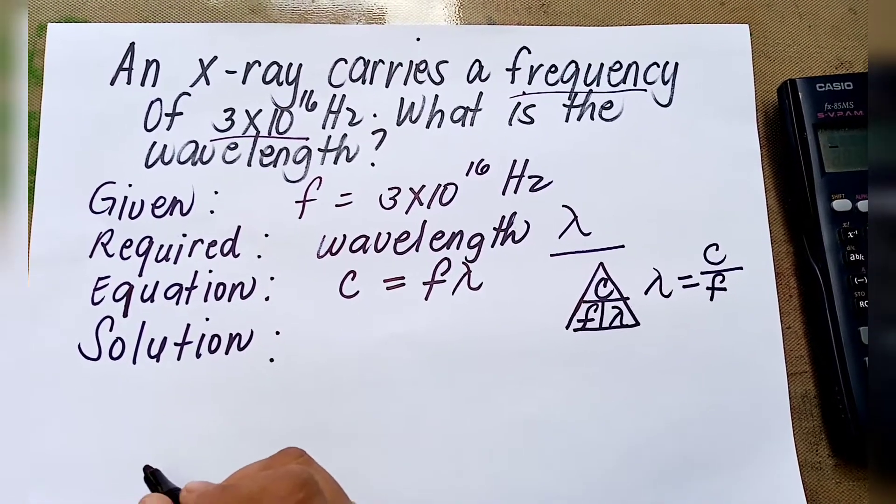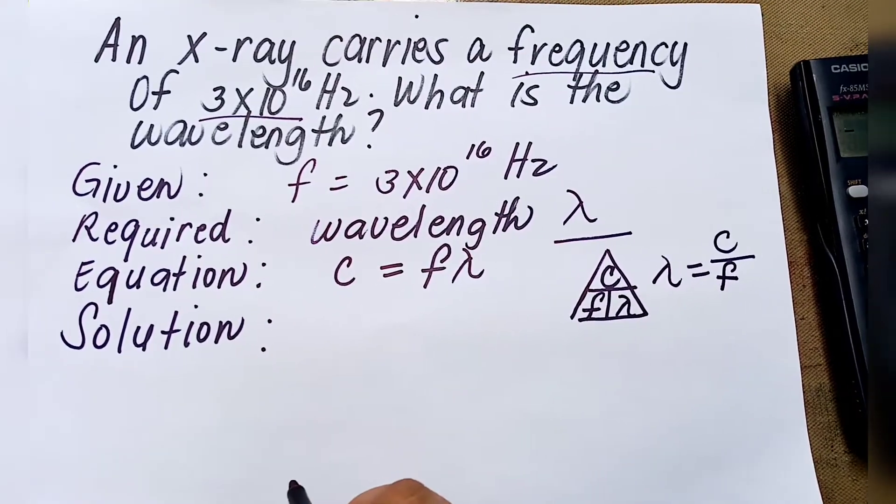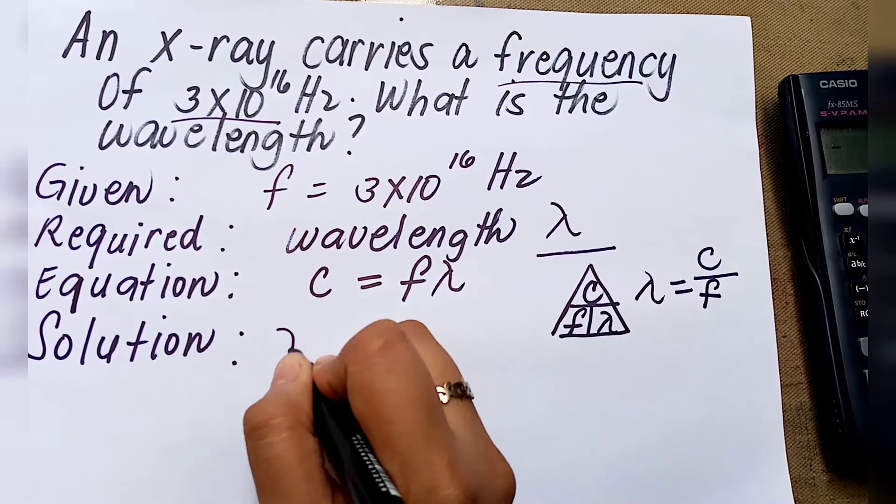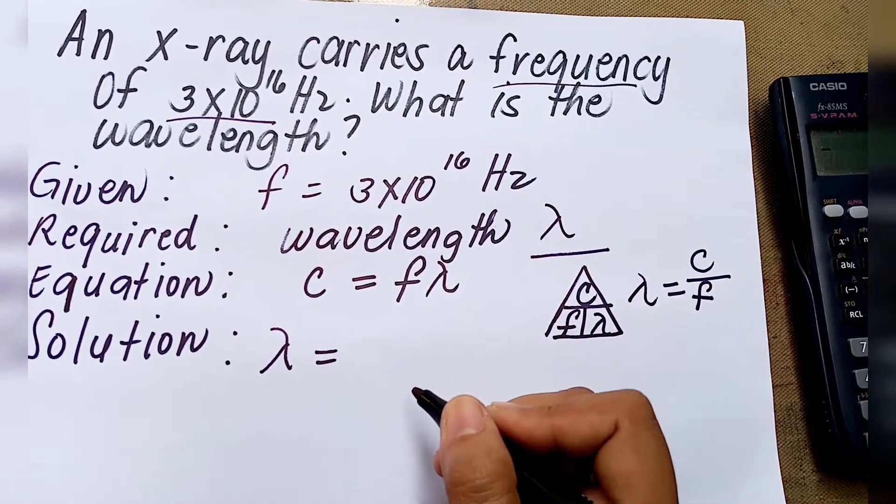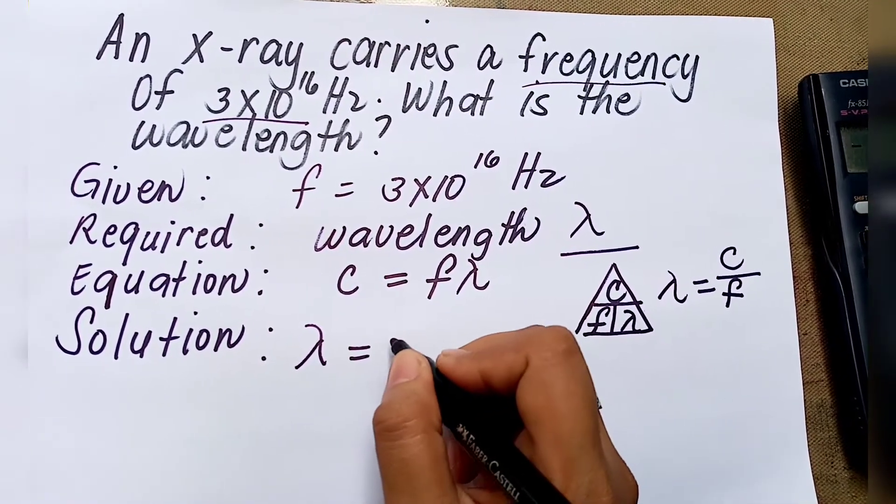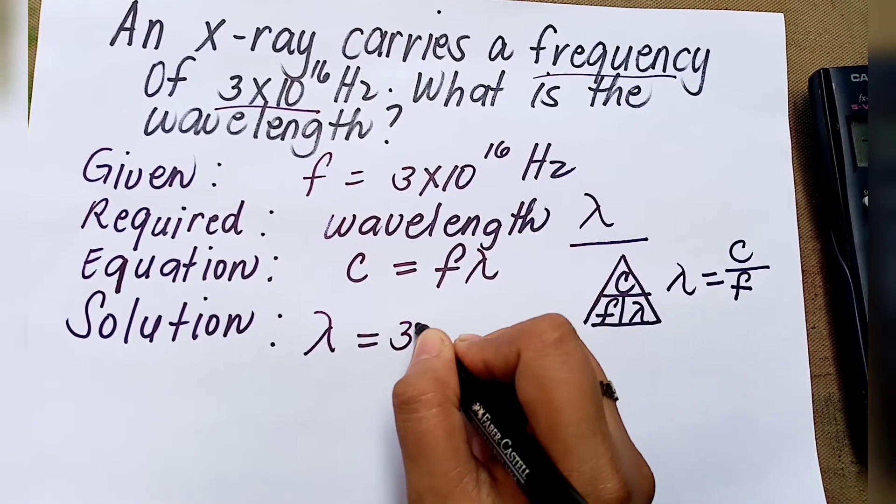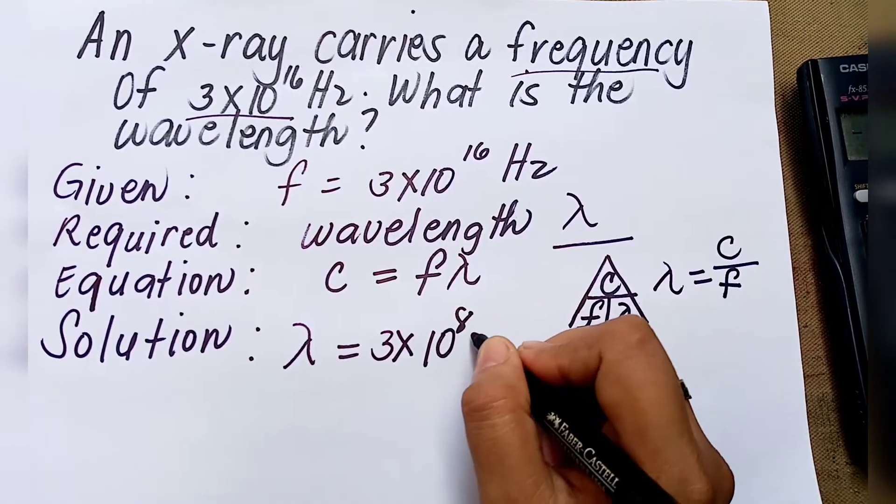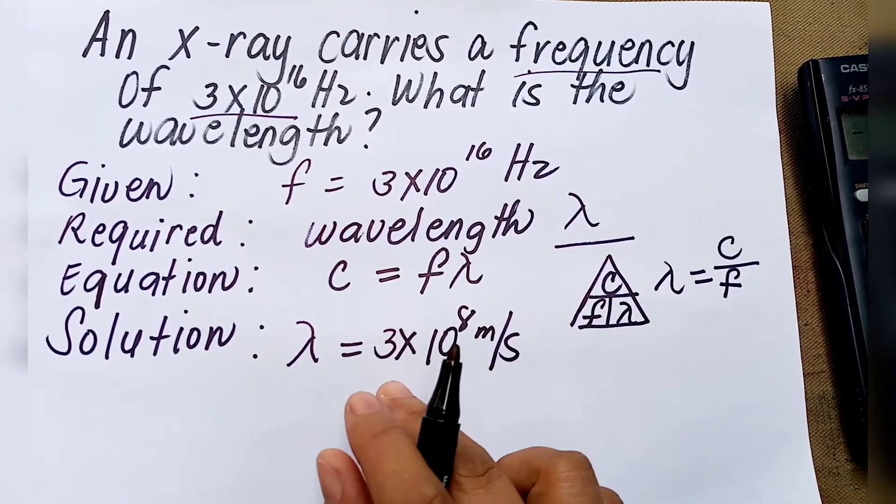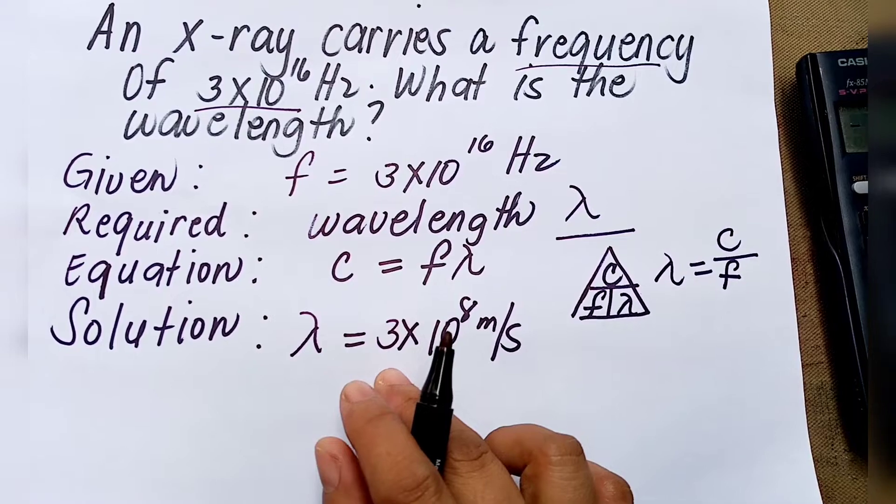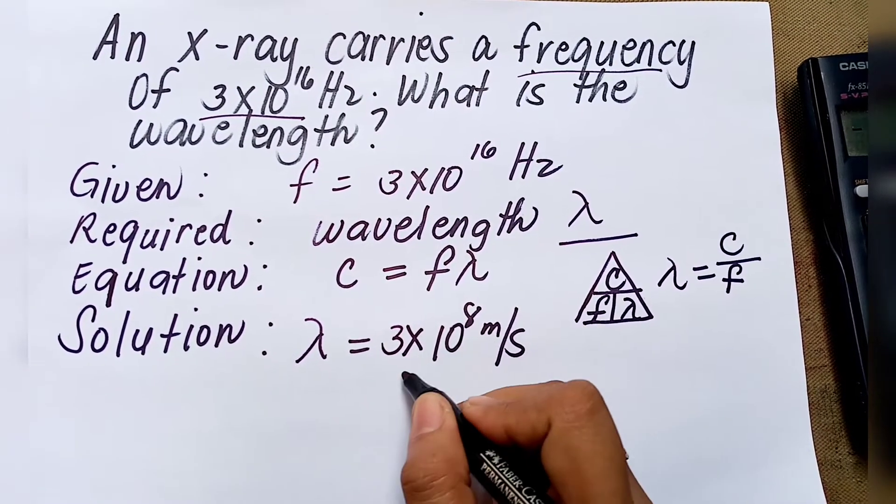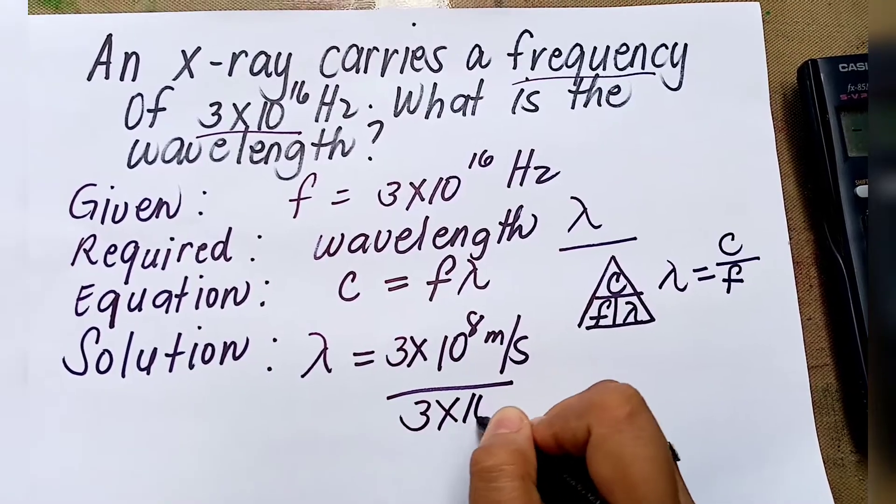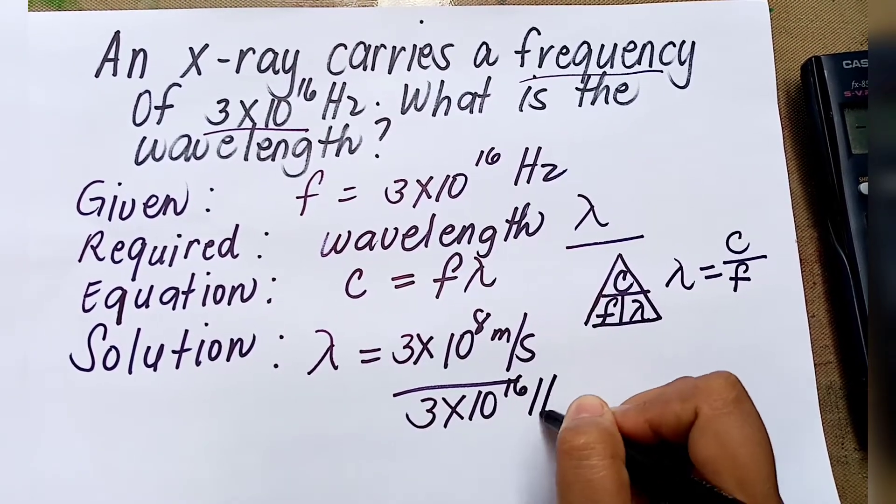We have now the formula to be used. Let us proceed with the solution. Wavelength is equal to 3 times 10 to the 8 meters per second, which is the speed of EM waves, divided by the frequency, which is 3 times 10 to the 16 Hertz.